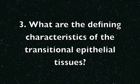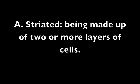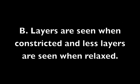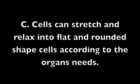Question 3. What are the defining characteristics of transitional epithelial tissues? A. Stratified, being made up of two or more layers of cells. B. Layers are seen when constricted, and less layers are seen when relaxed. C. Cells can stretch and relax into flat and rounded-shaped cells according to the organ's needs. D. Both A and B.